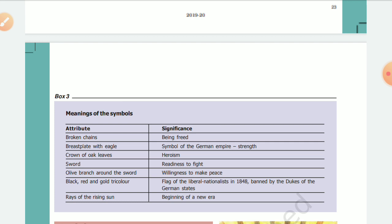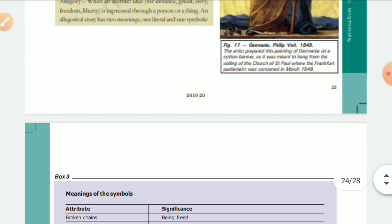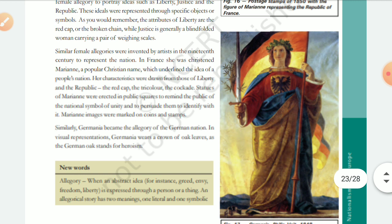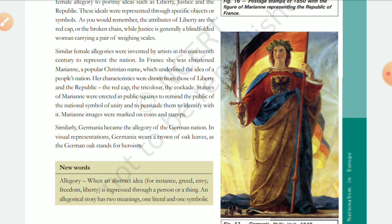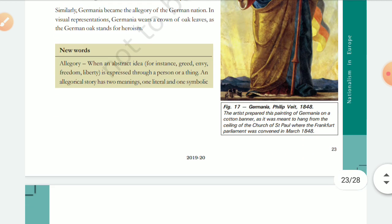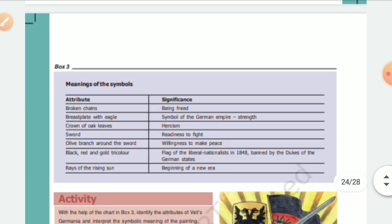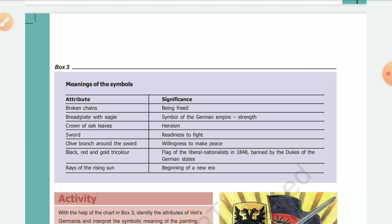The crown of oak leaves — we have studied before that the oak is the heroism tree. The sword here is symbolizing that we are ready to fight and active enough to fight for our freedom. The olive branch around the sword means willingness to make peace — we are ready to fight but we have a willingness to make peace.